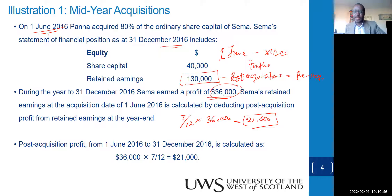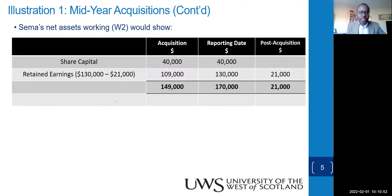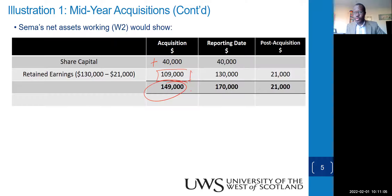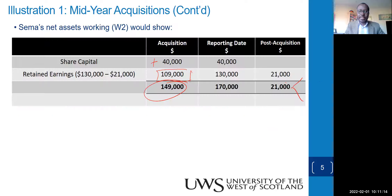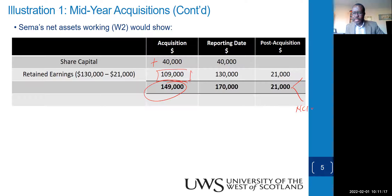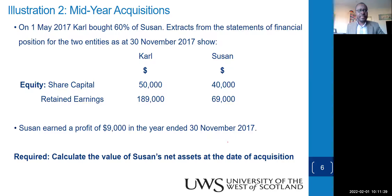We subtract that 21,000 from the 130,000 year-end retained earnings to get our pre-acquisition profit of 109,000. Adding share capital gives us the net identifiable assets of the subsidiary used for calculating goodwill. The post-acquisition portion is split: NCI receives 20% and the parent receives 80%.